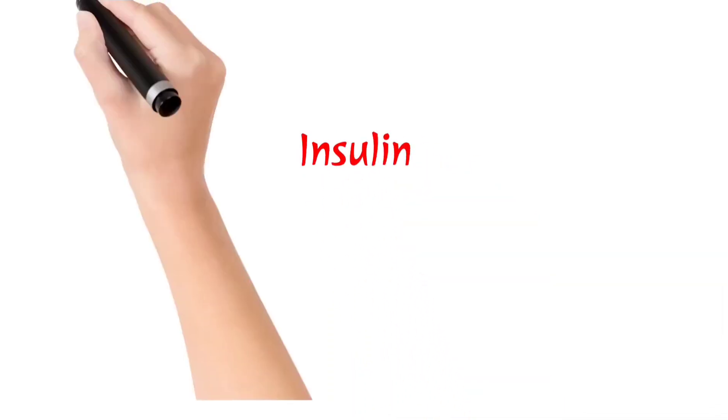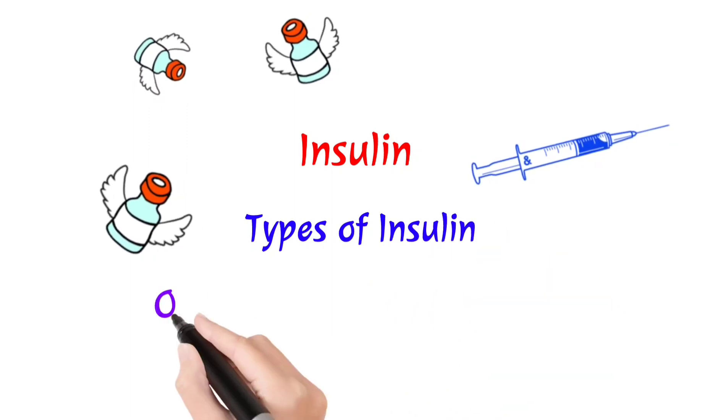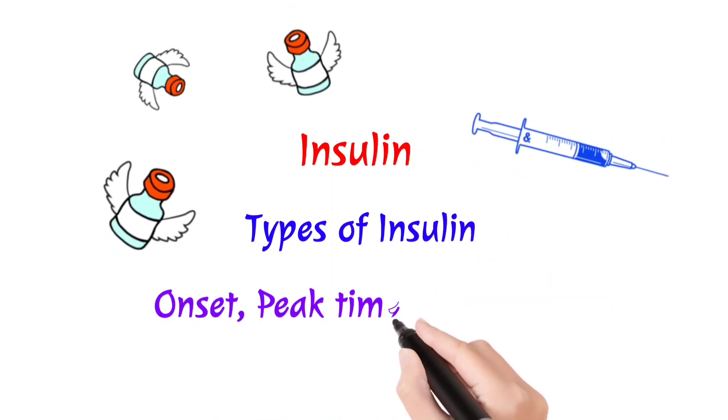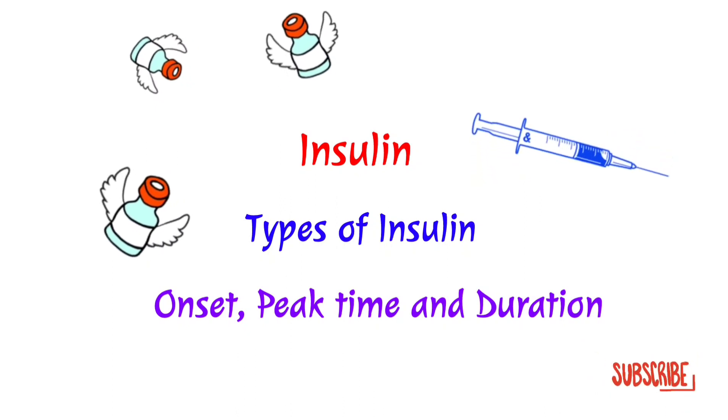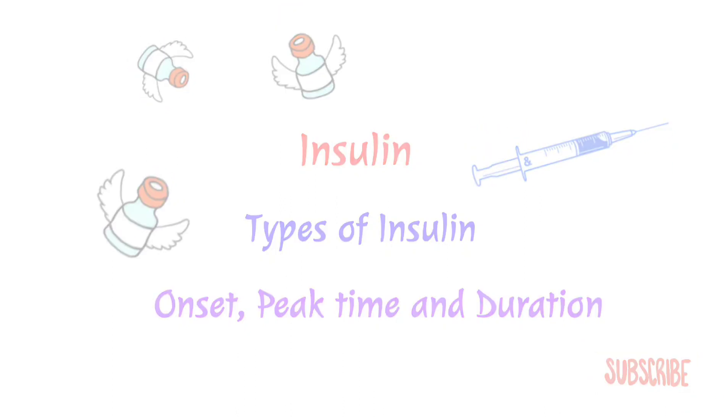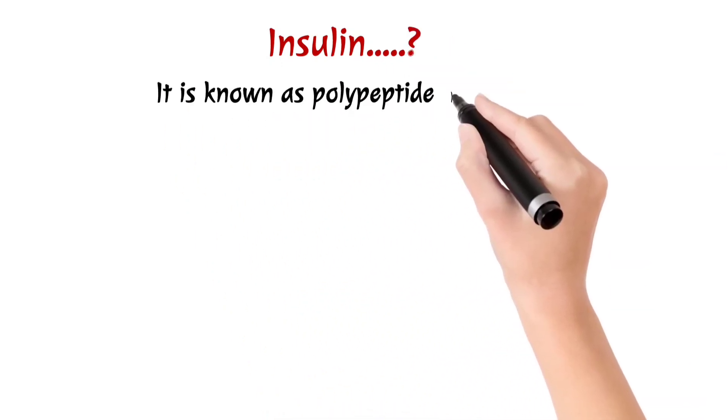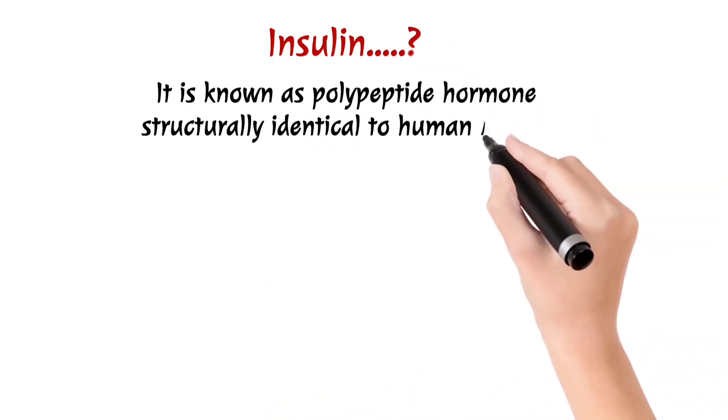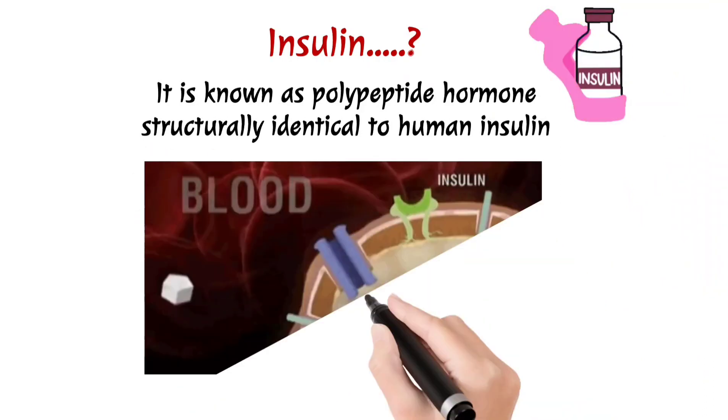In this video, we are going to talk about insulin and the types of insulin, onset, peak time, and duration. For more videos and updates, subscribe to my channel. Now let's look at insulin. Actually, insulin is known as a polypeptide hormone structurally identical to human insulin. It consists of 51 amino acids, 21 in chain A and 30 in chain B.